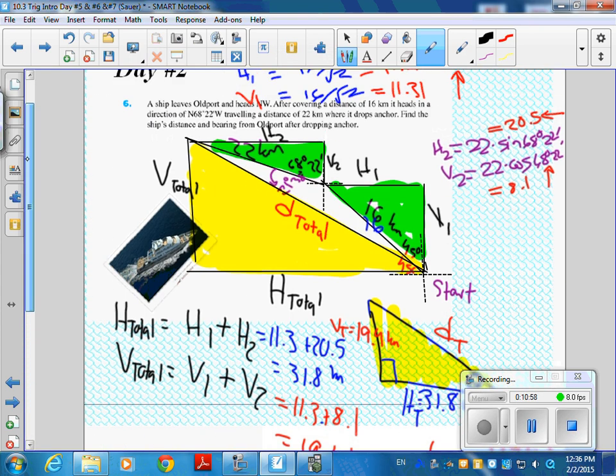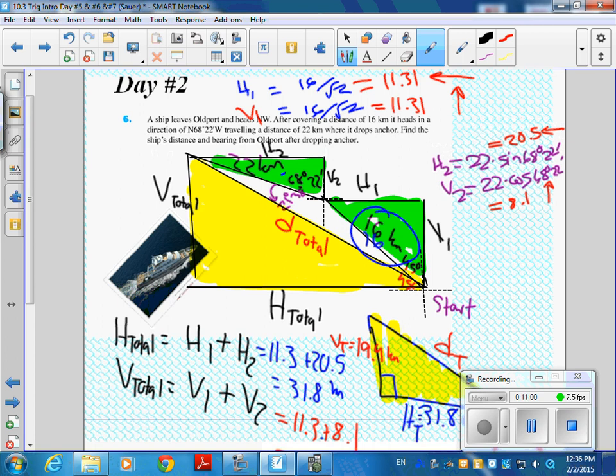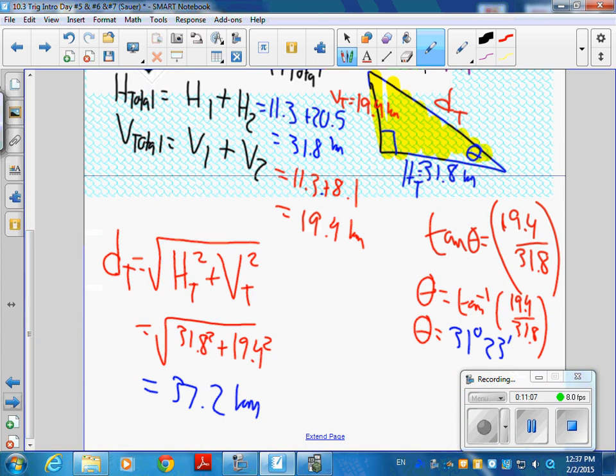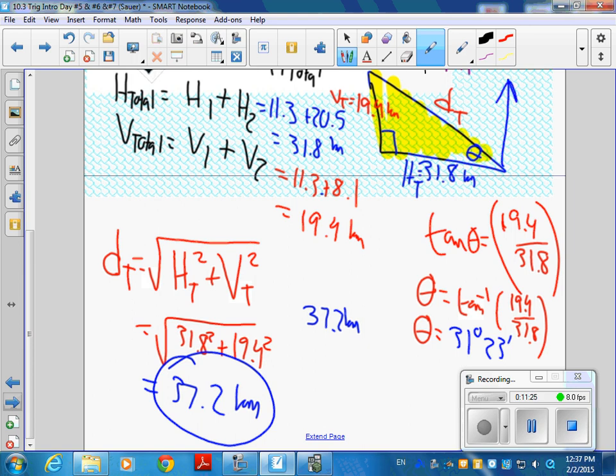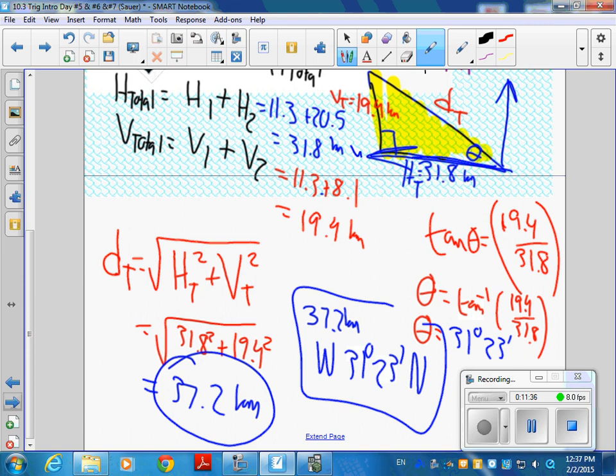Now, think about this. When the boat went 16 kilometers and 22, if they just went straight ahead, it would be 38. Does it make sense that this is less than 38? Yeah. It should be less. So, the answer would be 37.2 kilometers. Then it would be, I think this is north, or actually, this is west. West, 31 degrees, 23 minutes north. So, you start by going west, and then you're going to sweep that angle going north. And that's that boat problem worked out, so you can find the bearing and the distance.